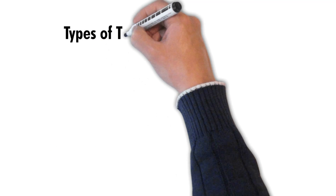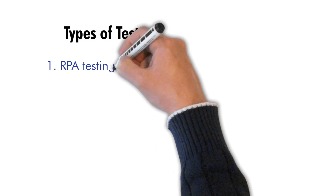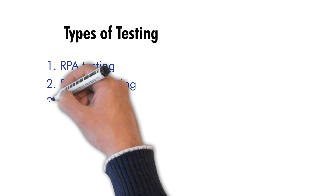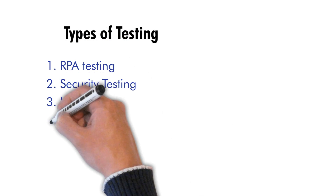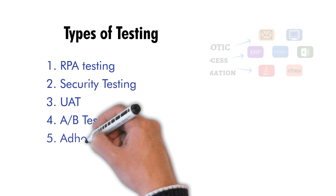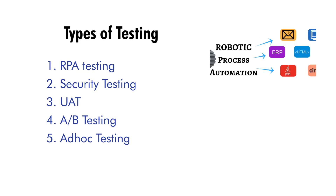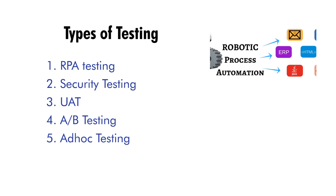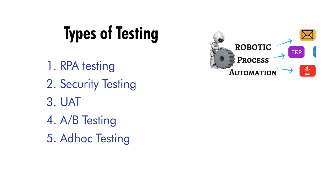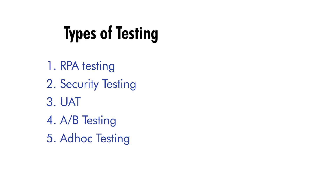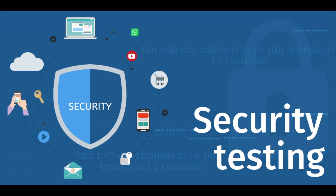Now let's see which types of testing we can do on these chatbots. The first is RPA testing — an advanced software testing technique that allows bots to mimic human actions and automate tasks. By leveraging RPA testing, businesses can effectively test the functional and non-functional aspects of an AI chatbot. Next is security testing — data security is a major concern for all enterprises.